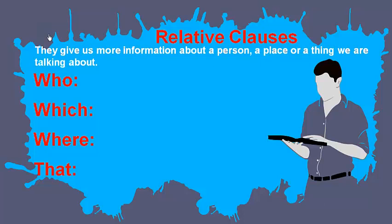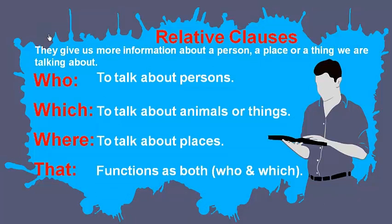After that, guys, we are going to take a look at relative clauses. Do you remember what relative clauses are? They are words that give you more information about a person, a place, a thing, or an animal that you are talking about. Like, when we have the word 'who' — which is for people — 'which' for animals or things, 'where' for places, and 'that', which means both 'who' and 'which'.